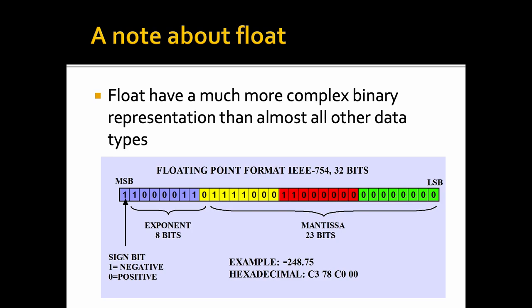Just before we go, while everything is represented in binary, floats are a bit of an edge case — they have a much more complex binary representation than almost all other data types. A 32-bit float (four bytes) is split into three parts: the sign bit (positive or negative), the exponent (8 bits), and the mantissa (23 bits). You don't really need to know about this at this level, but if it interests you, please look it up.